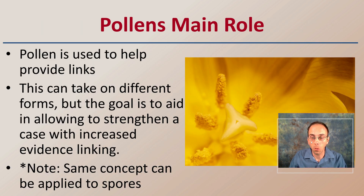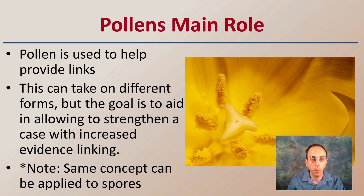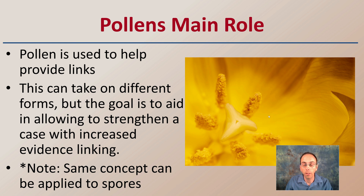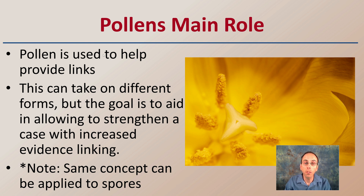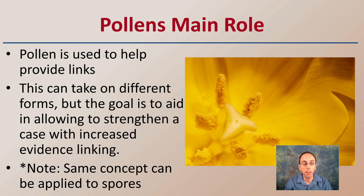Pollen is simply that small, tiny, almost dust-like appearance that flowers will produce for the goal of pollination to produce seeds. Pollen is used to help provide links, and this can take on different forms, but the goal is to aid in strengthening a case with increased evidence linking.